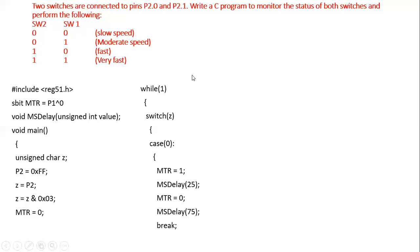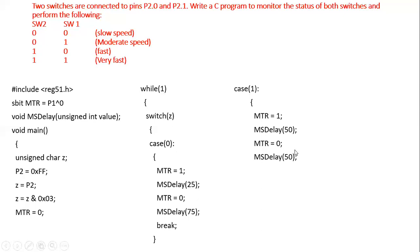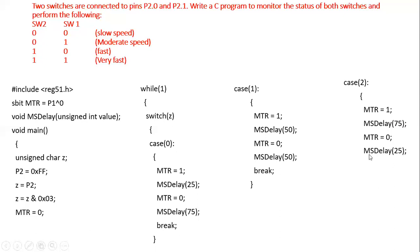Case 1 means binary 0-1, which gives 50% duty cycle — MTR equals one, ms_delay(50), MTR equals zero, ms_delay(50). For case 2, binary 1-0, we produce 75% on period and 25% off period — so we pass value 75 to the delay for the on period and value 25 for the off period.